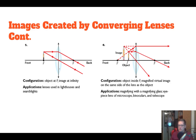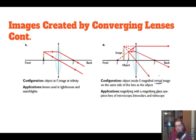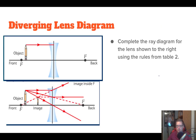If our object is between the focal point and the lens, we get a virtual image. This is the only time we get a virtual image with a converging lens — when we're inside the focal point. The image is virtual, on the same side, and it's magnified and upright. This is how magnifying glasses work, and the lenses of microscopes and binoculars.